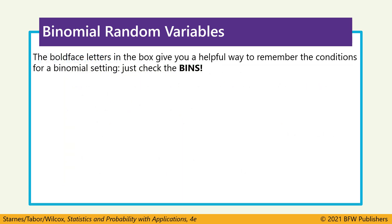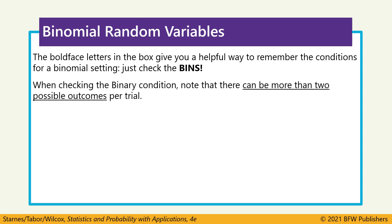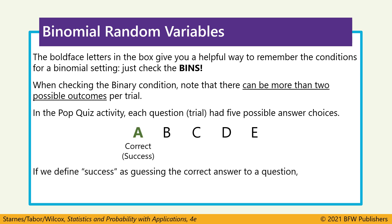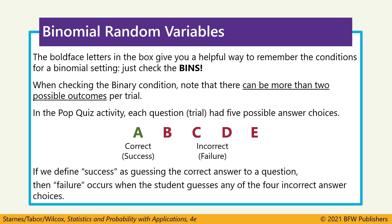Let's look closer at the B for binary. Binary means we have two outcomes — success and fail — but it doesn't mean we only have two options. In the pop quiz, each question has five possible answer choices, A through E. Only one is a success; the other four are labeled failures. So even though there are five options, there are only two outcomes: we choose a correct answer, or we choose an incorrect answer.